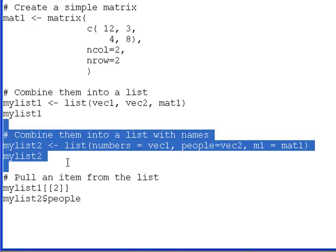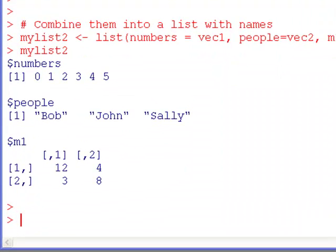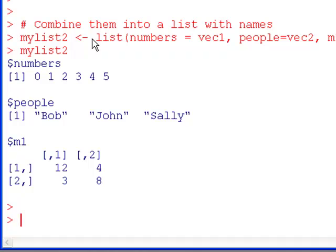So if I run this code, this is what I get. And instead of having these double brackets, it puts a dollar sign and numbers, dollar sign people, dollar sign m1. And if you've used R very much, you'll notice that dollar sign is very common for pulling items off of things. So like in regression, if you want the coefficients, use dollar sign coefficients, because what R is returning in a linear model is a list that has these items on it.